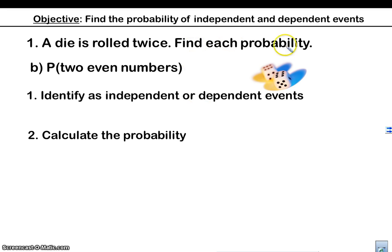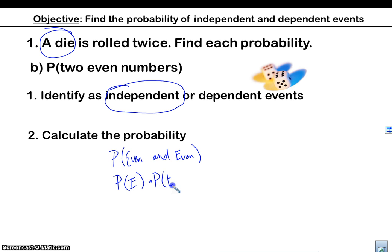A die is rolled twice. Find each probability. The probability of two even numbers. Again, we're only rolling one die. So I'm going to roll one, I'm going to get two, and I'm going to roll the same. I'm going to pick it up and roll it again. Again, these are independent because it doesn't matter what I got in the first one. What is the probability of getting an even number on the first turn? So we're really doing probability of even and even. What's the probability of getting an even times the probability of getting an even? Well, there are three even numbers out of six. So that's three sixths. What's the probability of getting an even here? Three sixths. So we got one half times one half. The probability is one fourth.